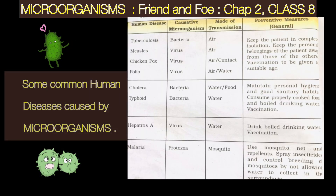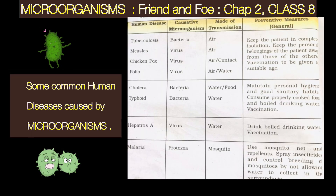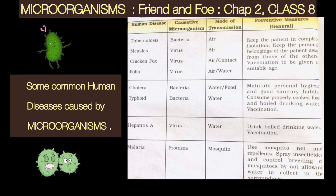This chart shows various human diseases like tuberculosis, measles, chickenpox, and polio, which are caused by bacteria or viruses. We can see the modes of transmission — some are spread by air, through contact, or through water. Other diseases like cholera and typhoid are caused by bacteria, hepatitis A is caused by a virus, and malaria is caused by protozoa.